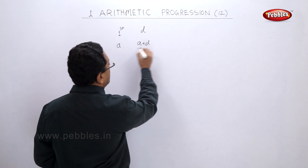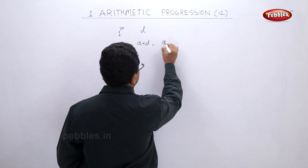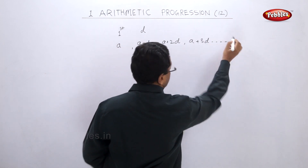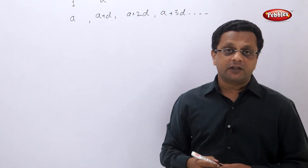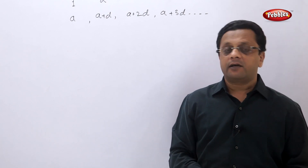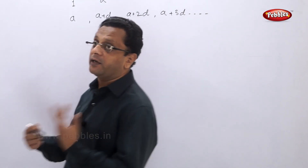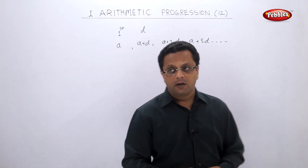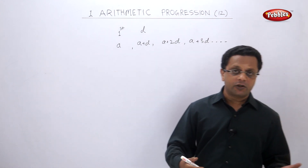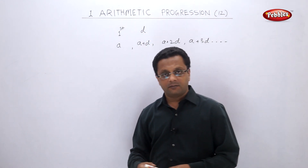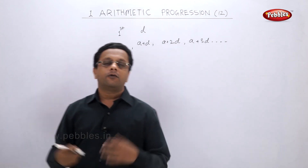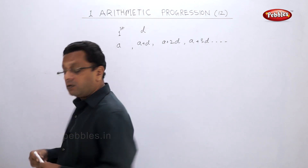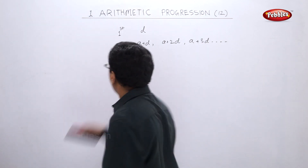The second term will be a plus d, the third term will be a plus 2d, the fourth term a plus 3d, and so on. In the case of sequences, we have to analyze and find a formula for tn — the nth term. But in arithmetic progression, since the difference between two consecutive terms is the same, the formula is very easy. Now let us see the terminology of arithmetic progression.